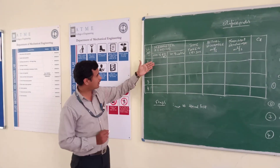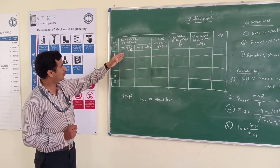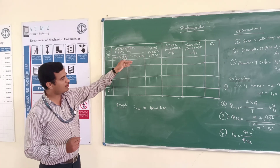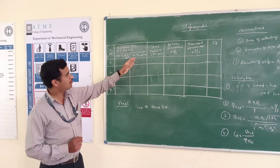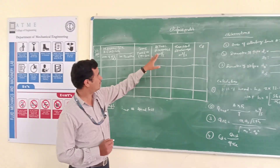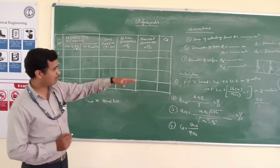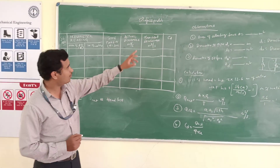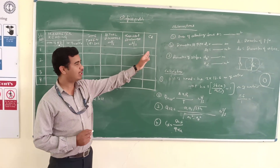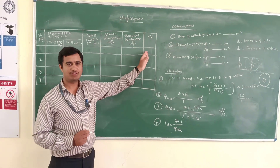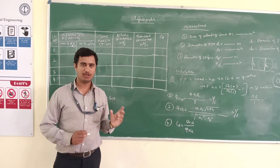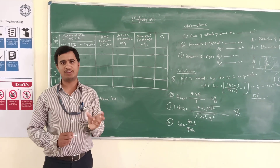We take the data from the experimental setup in mm of Hg, and then mm of Hg will be converted into millimeters of water. Time taken is for the rising of 10 centimeters. The actual discharge can be calculated, and the theoretical discharge also can be calculated using the formula. Finally, you have to find out the CD value. The CD of the orifice meter will vary between 0.6 to 0.65.